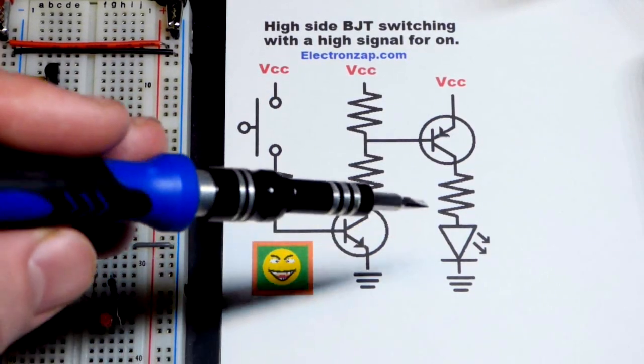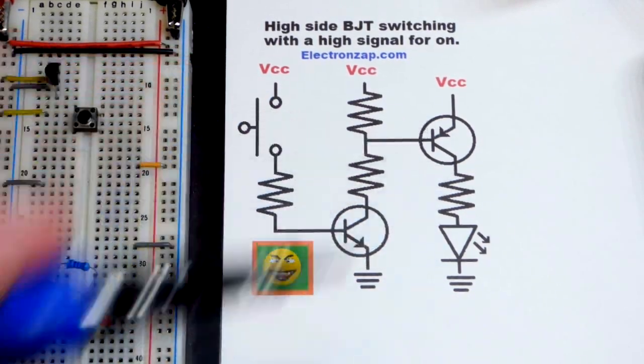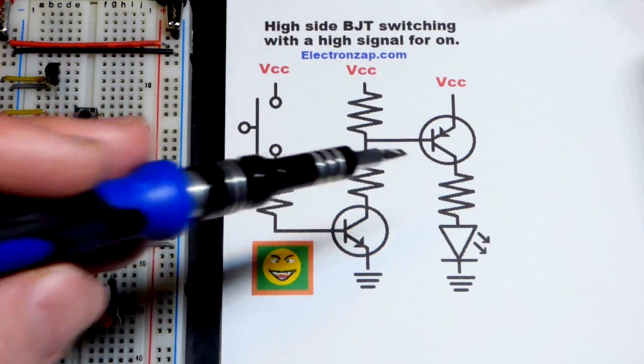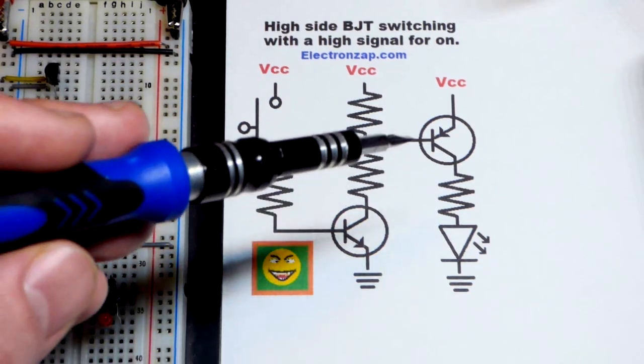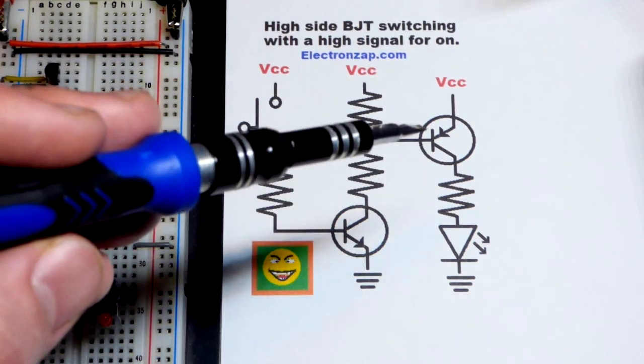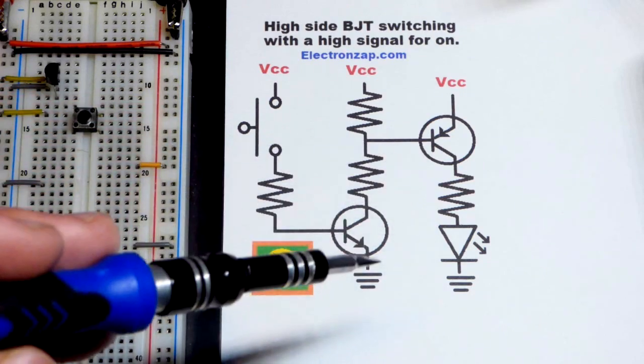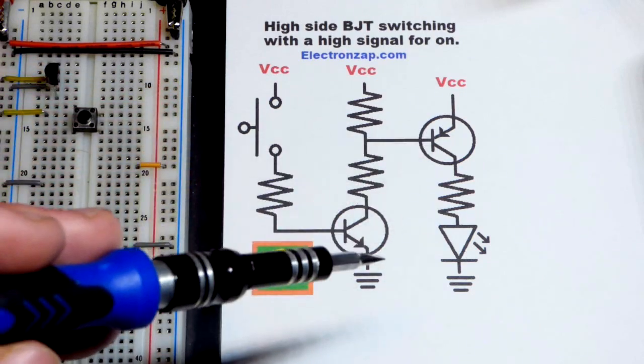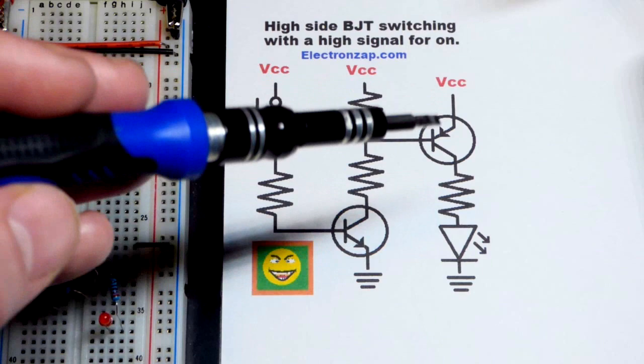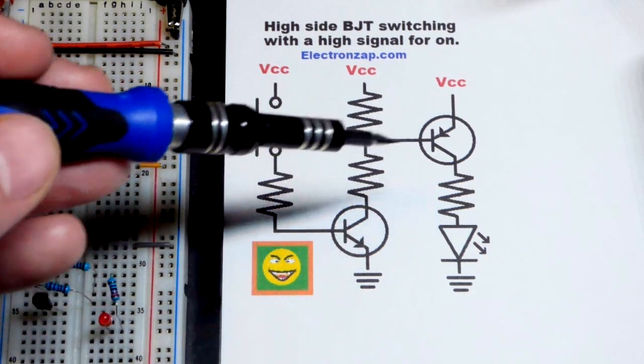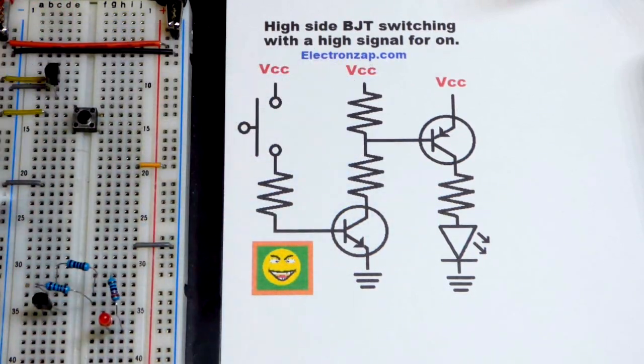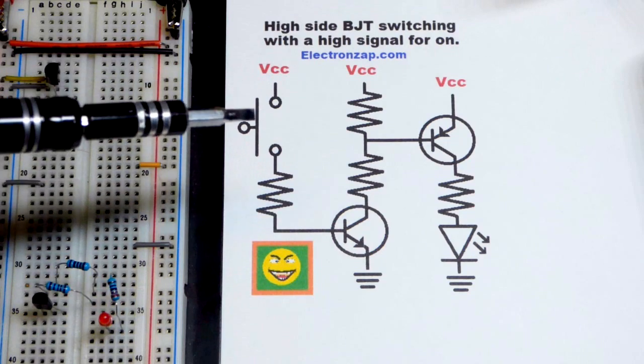Now in this video we're going to switch a load with a PNP bipolar junction transistor. This is normally awkward because we need to give it a low signal relatively close to ground to turn it on, and then to hold it off, a more positive signal, basically the positive supply. This circuit eliminates that.